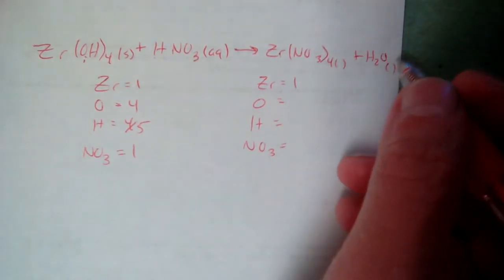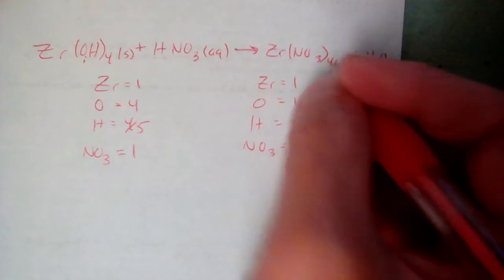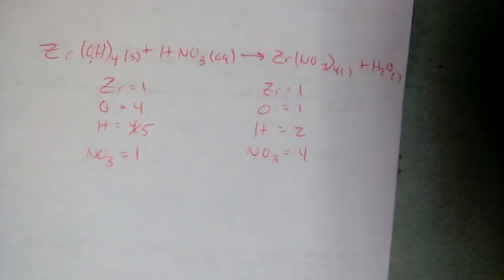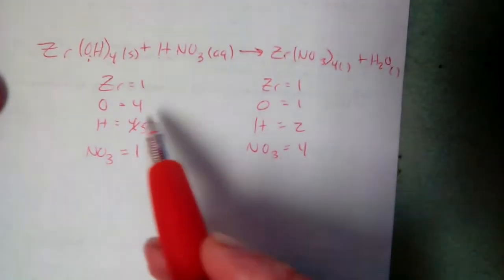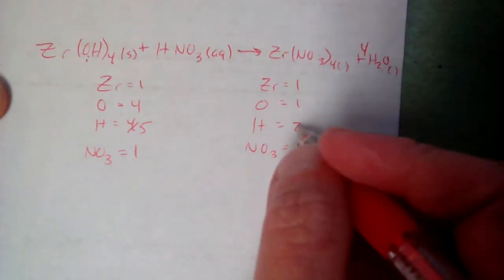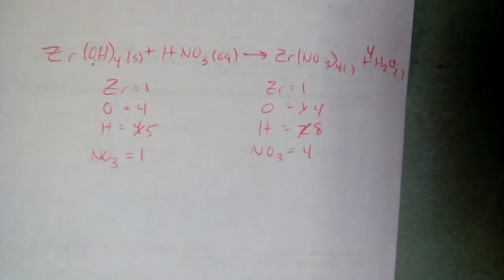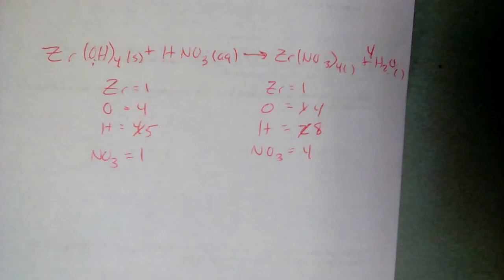Zirconium balances: one on each side. We have 4 OH groups (4 oxygens, 4 hydrogens) on the left. Put a 4 in front of water: 4×2 = 8 hydrogens and 4 oxygens. Then fix the nitrates — put a 4 in front of HNO3: 4×1 = 4 hydrogens on the left and 4×1 = 4 nitrates. Four hydrogens from HNO3 plus four from Zr(OH)4 gives 8 hydrogens total — that's balanced. Four nitrates on each side as well.